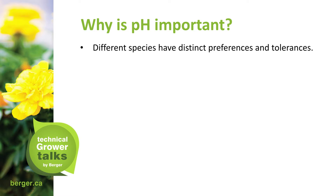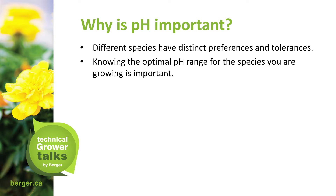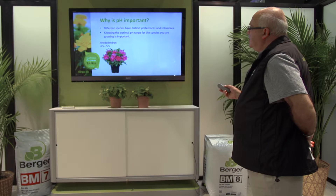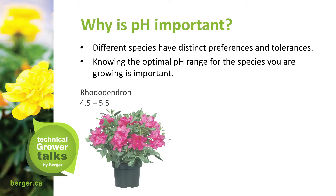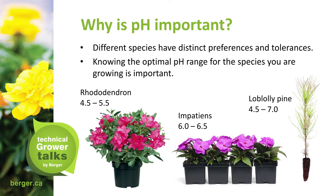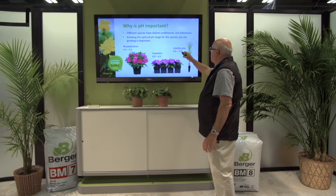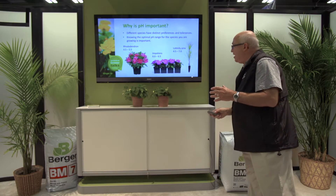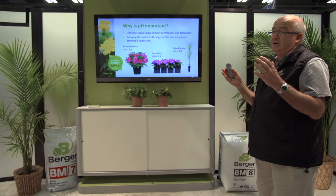Why is pH important? Different species have distinct preferences and tolerances. Knowing the optimal pH range for the species you are growing is very important. For example, rhododendron is very comfortable growing within a pH of 4.5 to 5.5, and impatiens need a higher pH range. Loblolly pine has a very broad pH range, so it can be grown across a wider pH range.